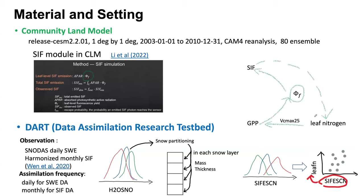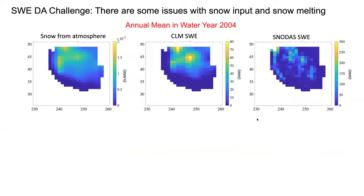The mechanism behind this scheme assumes that in the Community Land Model, leaf nitrogen influences Vcmax, and through Vcmax, GPP will be impacted. In the SAFE module, SIF is calculated using GPP, so if we change the value of leaf nitrogen, that could have an impact on GPP.